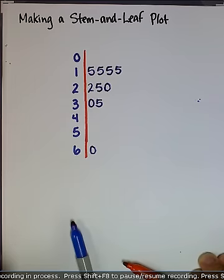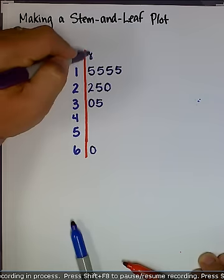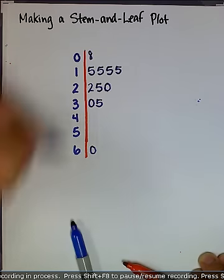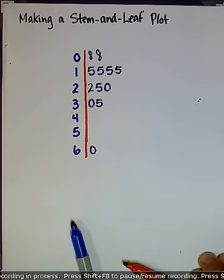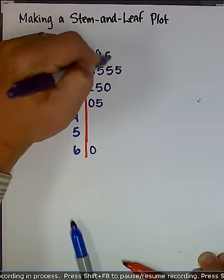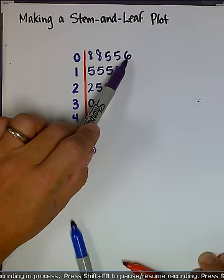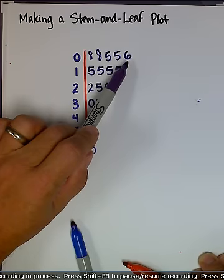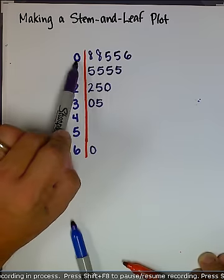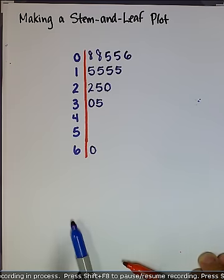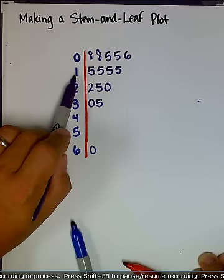Now what I'm going to do is just take the rest of the data values and fill in my leaves. So I know I've got 8 minutes. Just bear with me while I fill these in. For example, this value right here represents 6 minutes, since there are 0 tens and 6 ones.